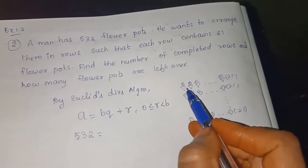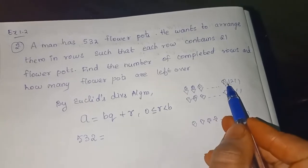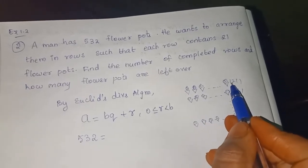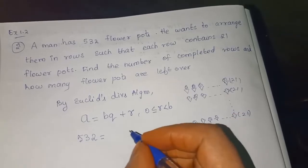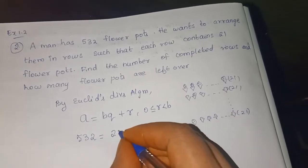Divisor is what? He is going to divide equally in rows. How many parts in each row? 21 parts in each row. So 21 is the divisor.